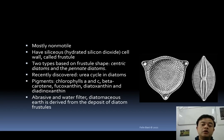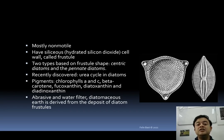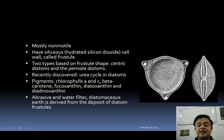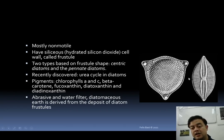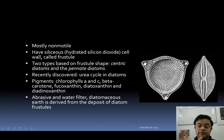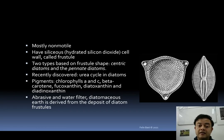There are two kinds of diatoms based on frustule shape. One is called the centric diatom, which is radially symmetrical — like a starfish. The other is called the pennate diatom, which is bilaterally symmetrical — like a human being, where one line divides the body into two mirror images.